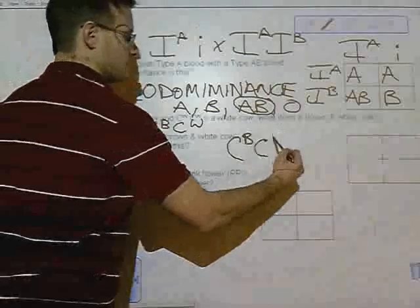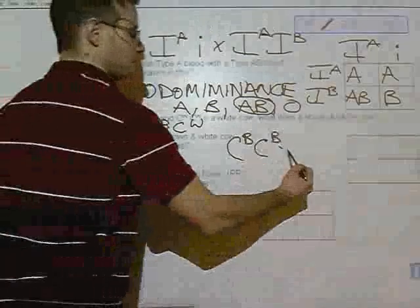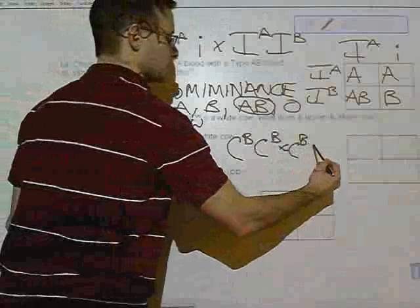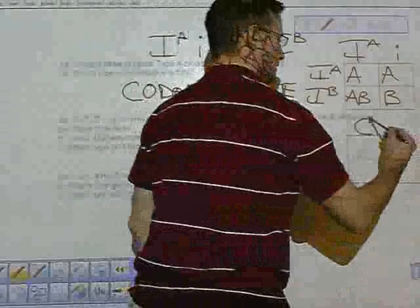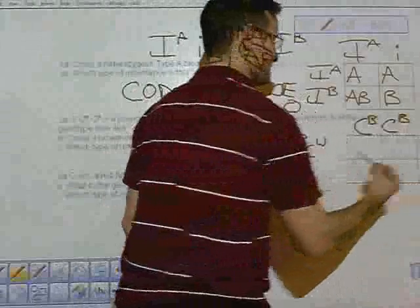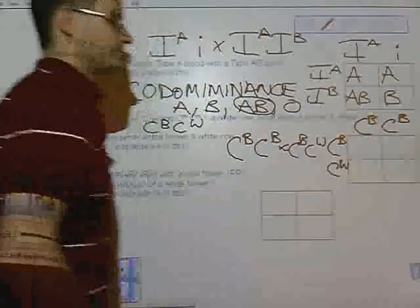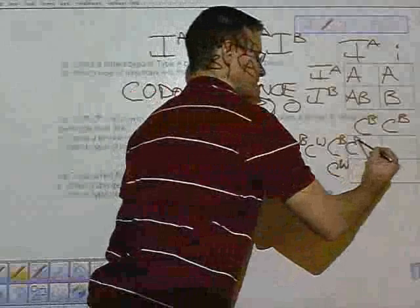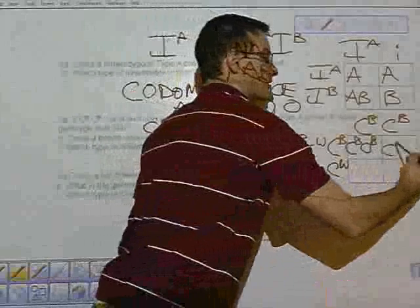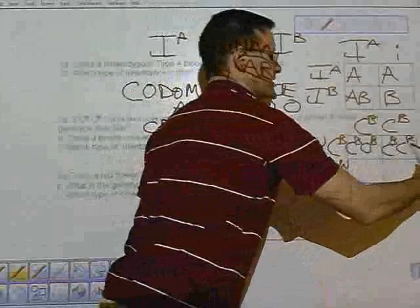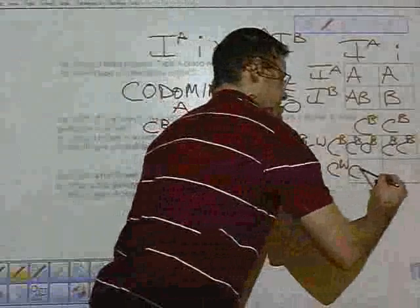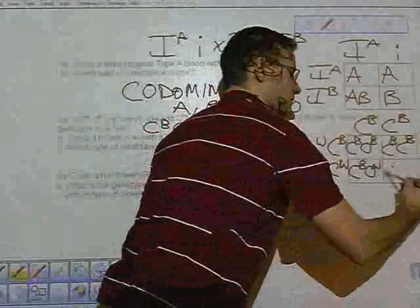So crossing a brown cow with a brown and white cow is going to look like this. Here's the brown cow, here's the brown and white cow. In our Punnett square, here's C^B C^B, here's C^B C^W. So here you have C^B C^B, same here C^B C^B, and on the bottom C^W C^W or both.